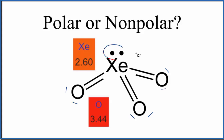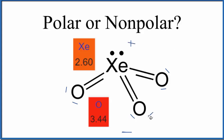Because this lone pair up here is pushing these oxygens down, we don't have a symmetrical molecule. So all of these oxygen atoms down here, which are more negative, means that this side of the molecule is going to be negative. And up here with the xenon, that's going to be positive. So we'll have poles, and we would consider xenon trioxide, XeO3, to be a polar molecule.